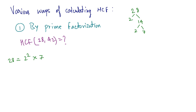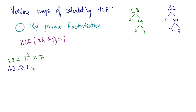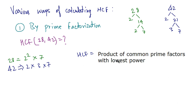Now we calculate the prime factors of 42. We can divide it by 2 — 2 times 21 is 42. Then divide by 3 — 3 times 7 is 21. So 42 can be written as 2 into 3 into 7. The highest common factor by using the prime factorization method is equal to the product of common prime factors with the lowest power. So we find what prime factors are common to both numbers.